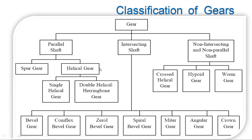For parallel shafts: spur gears, then helical gears — in helical gears we have single helical and double helical gears. We will see the characteristics of these different types in the coming slides in detail. For intersecting shafts, the gears used are bevel gears: coniflex bevel gears, spiral bevel gears, miter gears, angular gears, crown gears — these are all varieties of bevel gears used for intersecting shafts.